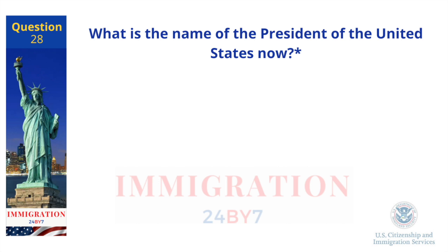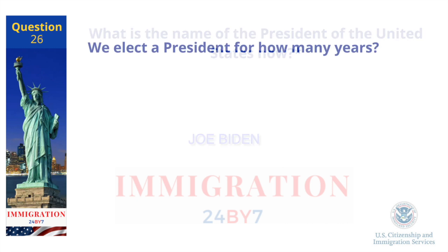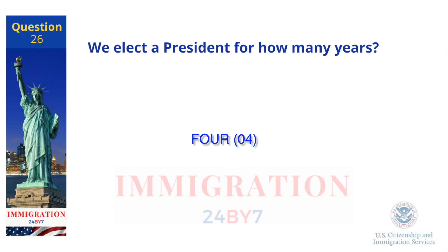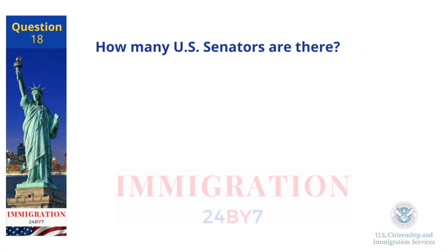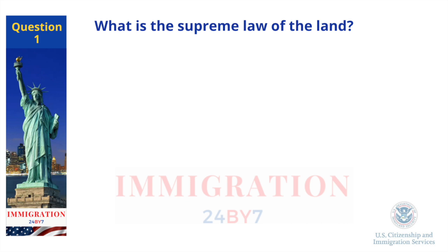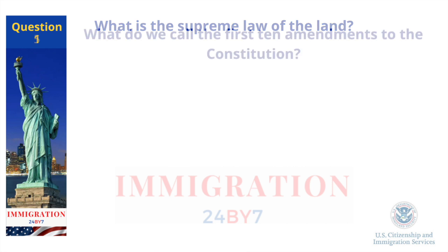What is the name of the President of the United States now? Joe Biden. We elect a President for how many years? Four years. How many U.S. Senators are there? 100. What is the Supreme Law of the Land? The Constitution.